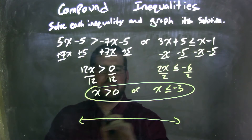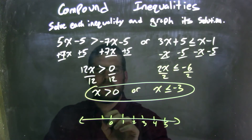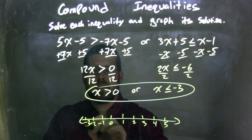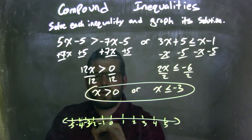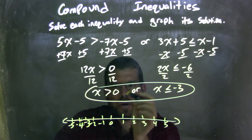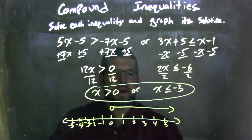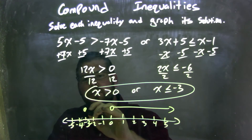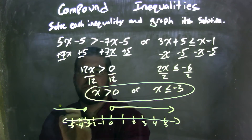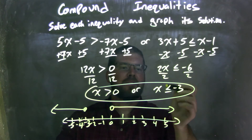Now I need to graph them. I'll set up a number line going from negative 5 to 5. For x is greater than 0, since it's not equal to 0, I'll place an open circle at 0 and draw an arrow to the right. For x is less than or equal to negative 3, since it's equal to negative 3, I'll place a closed circle at negative 3 and draw an arrow to the left. My graph matches my final answer: x is greater than 0 or x is less than or equal to negative 3.